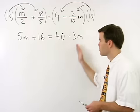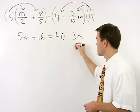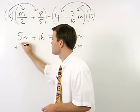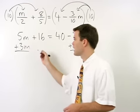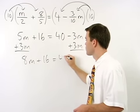Now let's move our m's to the left and numbers to the right by first adding 3m to both sides, and we get 8m plus 16 equals 40.